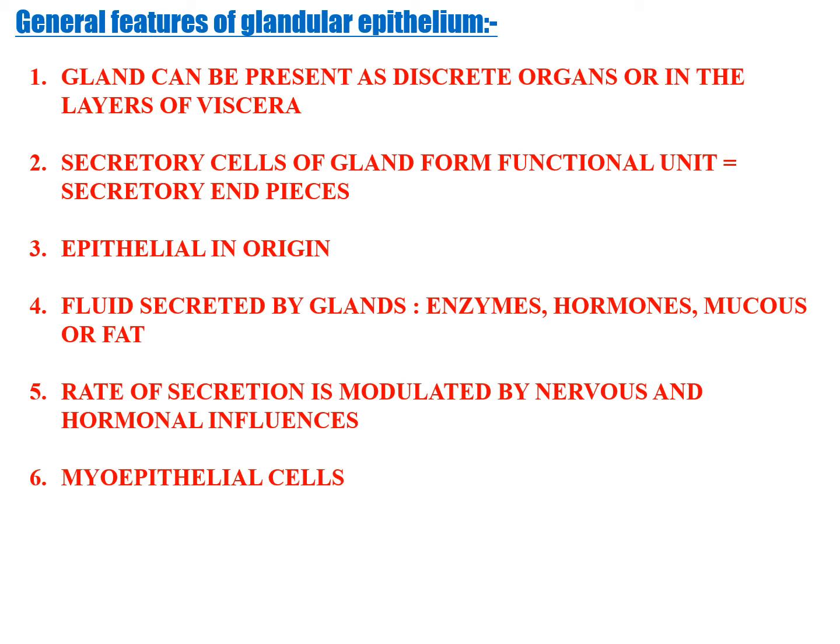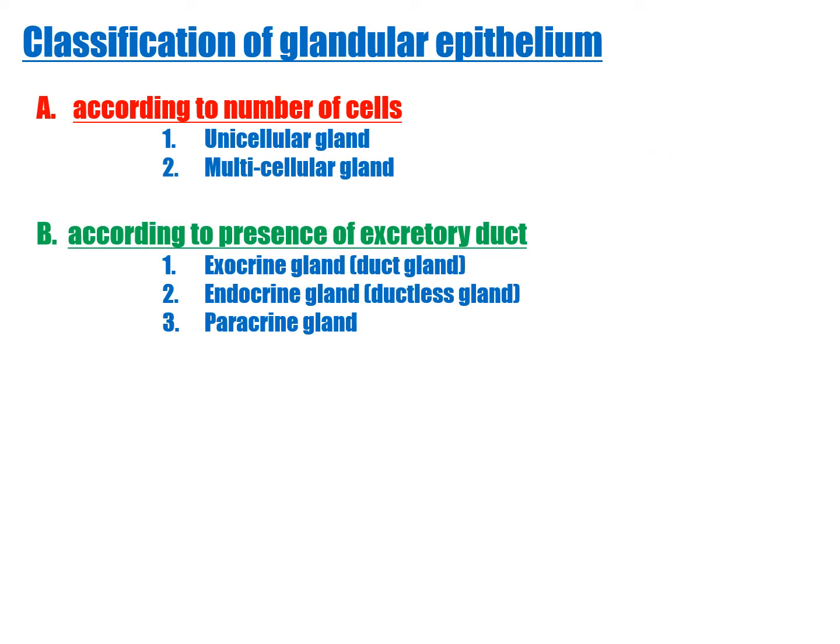Classification of glands is based on the number of cells. First: unicellular glands — single secretory cells interspersed among non-secretory epithelial cells, found in the epithelium lining the intestine. Example: goblet cells. Second: multicellular glands — most glands are multicellular and develop as a diverticulum from the epithelium surface. The distal part develops into the secretory element while the proximal part forms the duct. Examples: lacrimal gland, parotid gland.